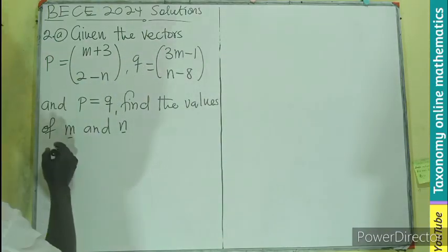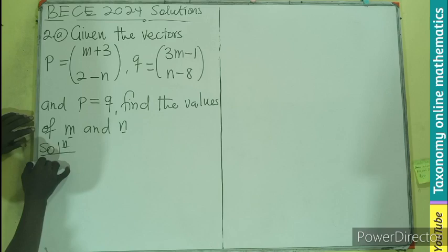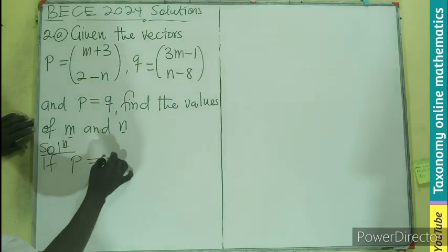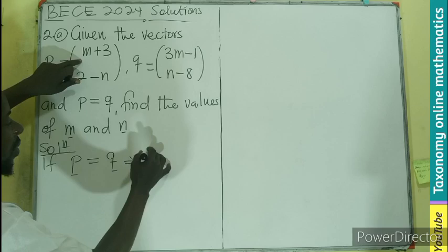Today is an equality of vectors. So we have our solution. So if P equals to Q as a vector, then it implies that